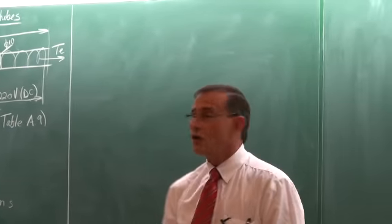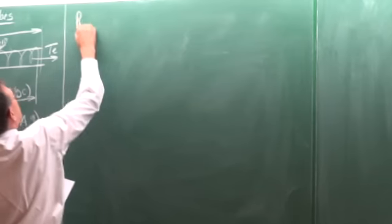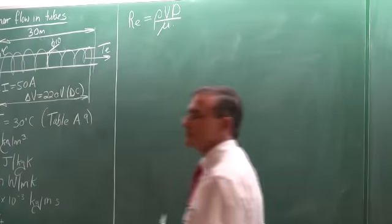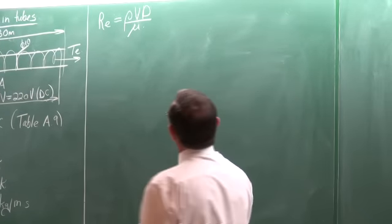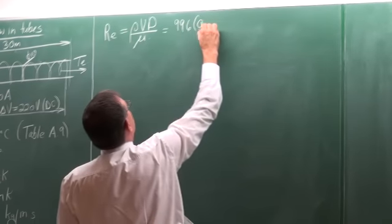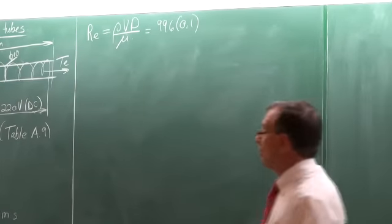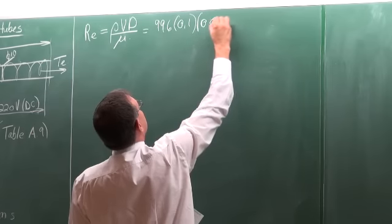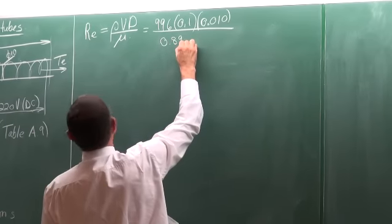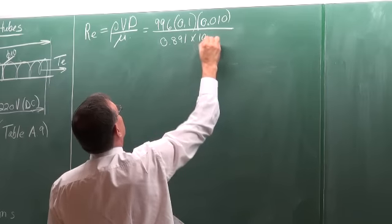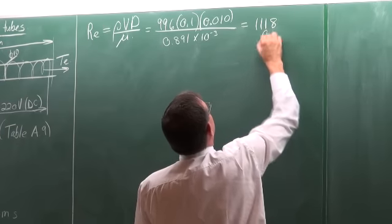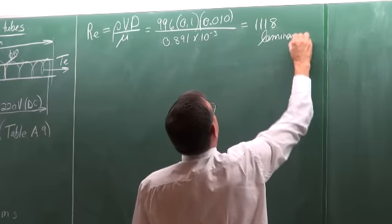Let's start with the calculation of the Reynolds number. The Reynolds number is equal to rho·V·D divided by the viscosity. The density is 996, the velocity is 0.1, the diameter is 10 millimeters, divided by the viscosity of 0.891 × 10⁻³. That gives us a Reynolds number of 1118, which means the flow is laminar.